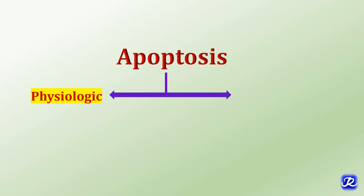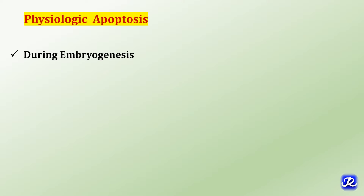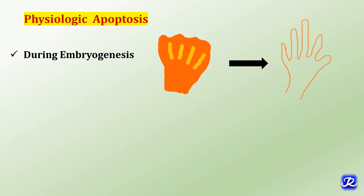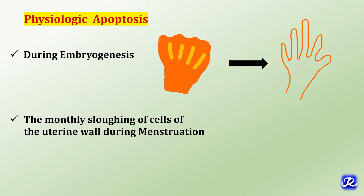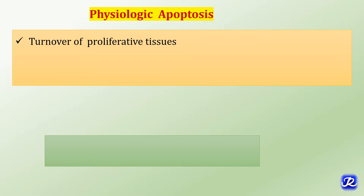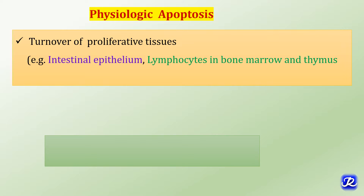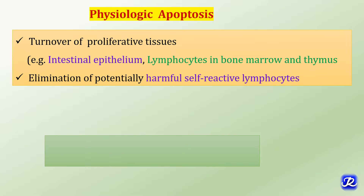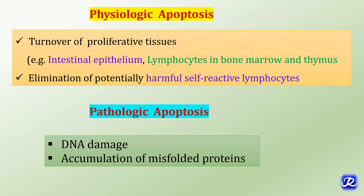Apoptosis can be physiological or pathological. During embryogenesis, hand development starts out as a paddle-like block of tissue, which is then carved into fingers by apoptosis of cells between the developing fingers. The monthly sloughing of uterine wall cells during menstruation is another example. Physiological apoptosis also occurs during turnover of intestinal epithelium and lymphocytes in bone marrow and thymus, and in elimination of self-reactive lymphocytes.